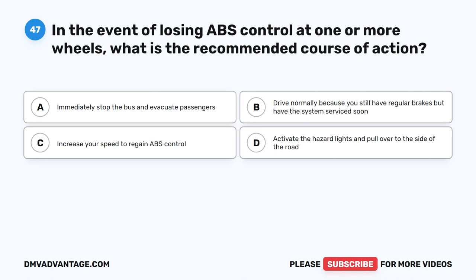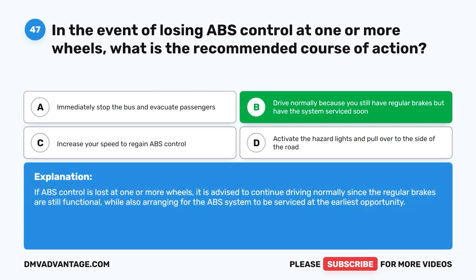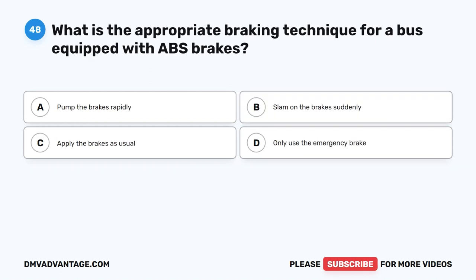Question 47. In the event of losing ABS control at one or more wheels, what is the recommended course of action? A. Immediately stop the bus and evacuate passengers. B. Drive normally because you still have regular brakes, but have the system serviced soon. C. Increase your speed to regain ABS control. D. Activate the hazard lights and pull over to the side of the road. The correct answer is B. If ABS control is lost at one or more wheels, it is advised to continue driving normally since the regular brakes are still functional, while also arranging for the ABS system to be serviced at the earliest opportunity.